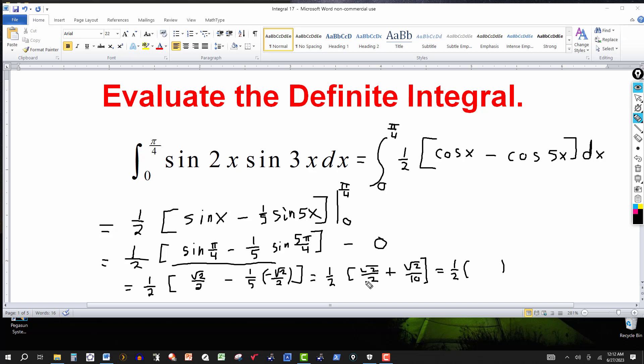I'll multiply by 5 and 5 here. I get 5 radical 2 over 10, and this will be 6 radical 2 over 10.